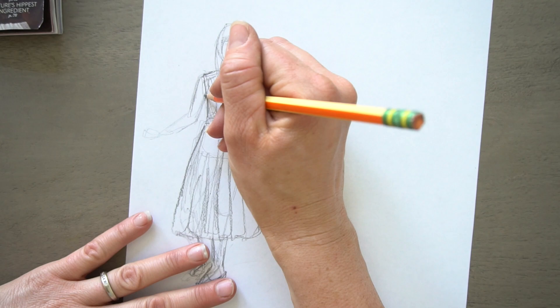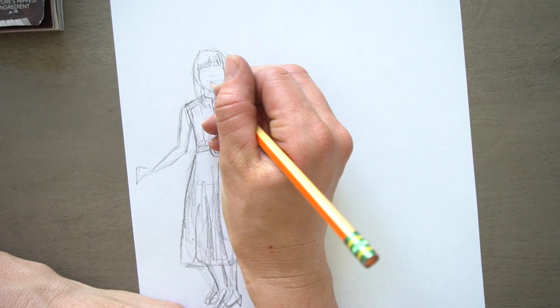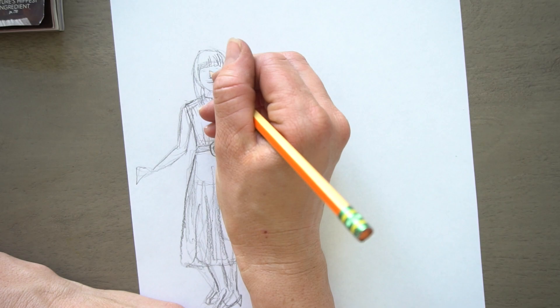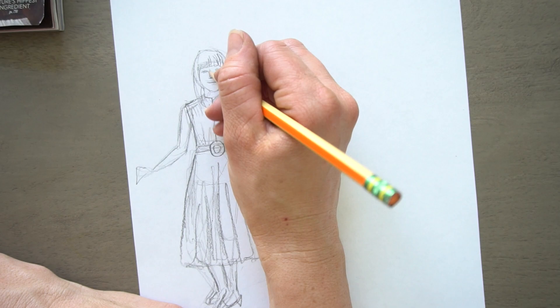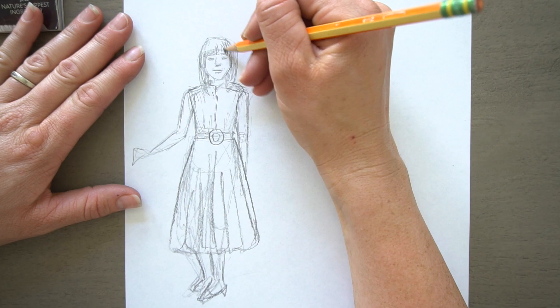And those are my three tips but the last one really is just to not give up because it does get a little bit daunting to draw the figure. We're just so used to looking at people and so when something's off with a figure drawing we pick up on it really quickly because we're so used to looking at people. And so I think that it's important to just study the figure and look at it. That's what the gesture drawings are for.